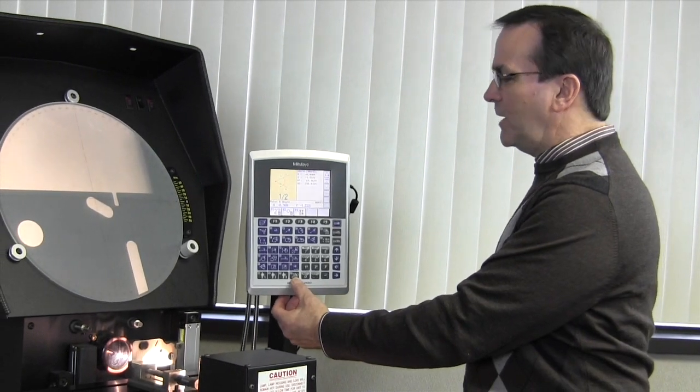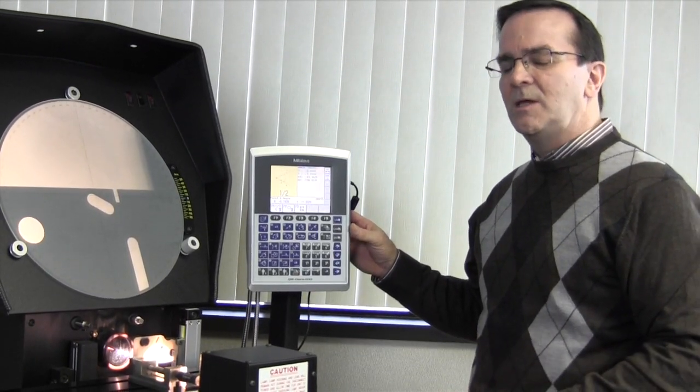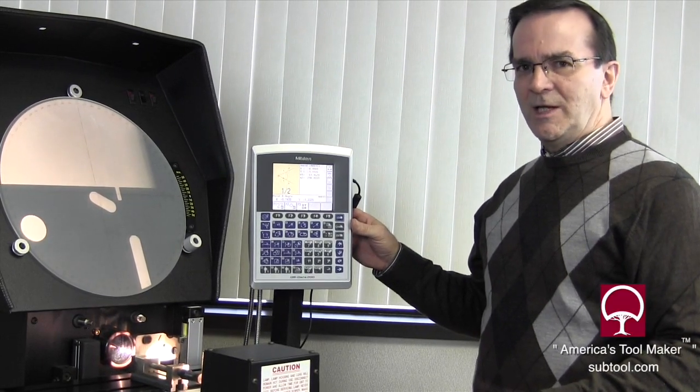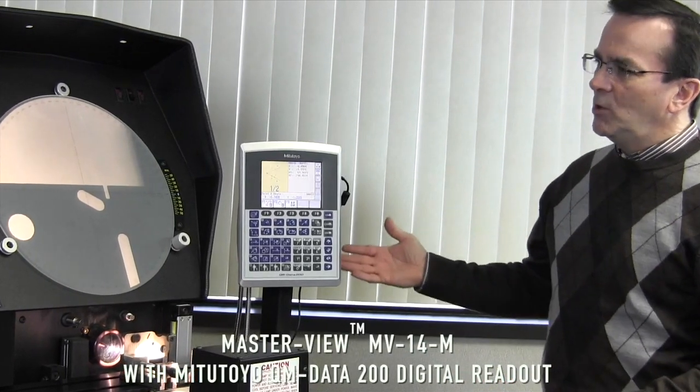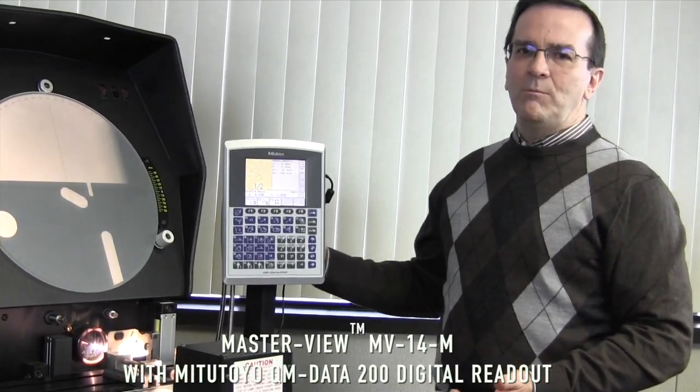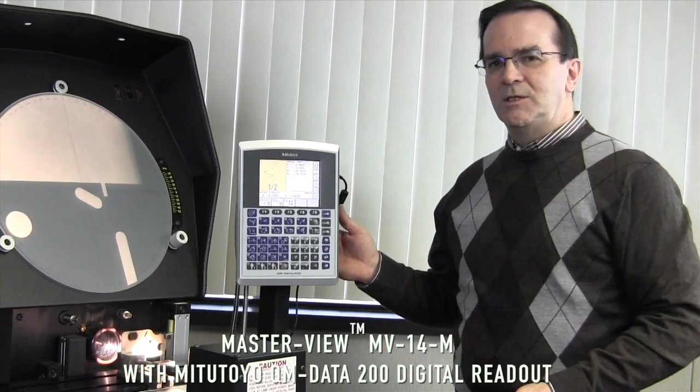You have output to a printer. This will interface with a printer. It will also interface with the Mitutoyo SPC system. So again, this is the Suburban Tool MV14M Comparator with the Mitutoyo QM Data 200 display.